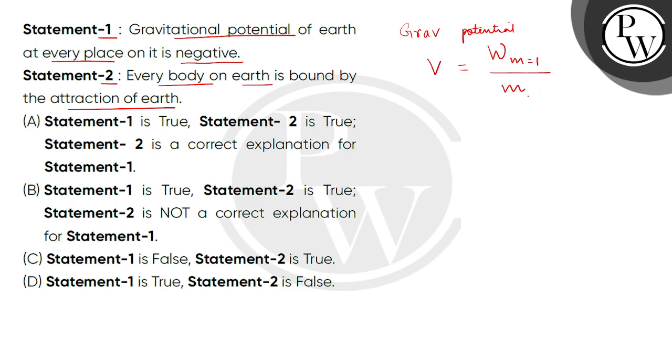So what happens here? When we find the work done, we take a diagram of earth. The center of earth is O, with mass M and radius R. Suppose this is an object.